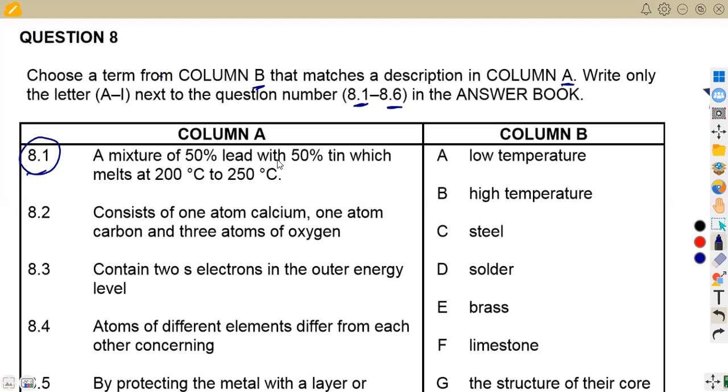So this one is a brass. No, it can't be a brass. It's a solder. It's a solder because we've got 50% lead, 50% tin. So lead plus tin, that is going to be a solder then. So here our answer is supposed to be a solder, but solder, where do we have our solder? It's at D. So the answer that you were supposed to write is just D.